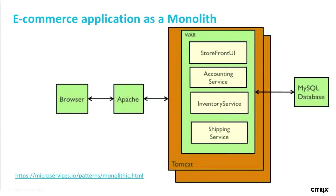Let's start with an example. Let's say you are building an e-commerce application. Typically you will build it like a three-tier architecture — you will have the web layer, the application layer, and then the database layer. In the application layer, you will do all your magic. You will have all the code and the business logic running in there — for example, the front end, the inventory service, catalog service, shipping service, et cetera. This is how organizations have been building applications.